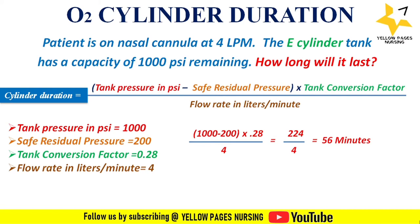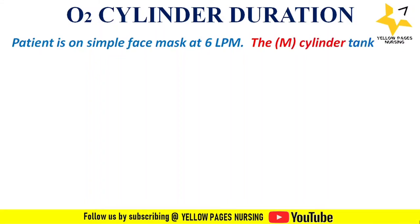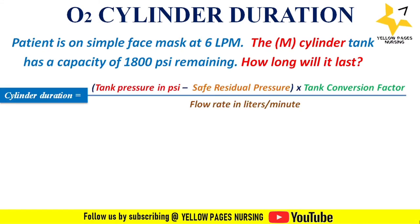One more example: a patient is on a simple face mask at 6 liters per minute. The M-cylinder tank has a capacity of 1800 PSI remaining. How long will it last? The formula: tank pressure in PSI minus safe residual pressure, multiplied by tank conversion factor, divided by flow rate in liters per minute.